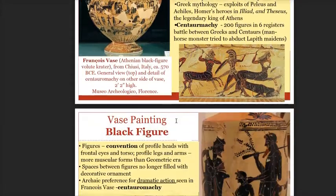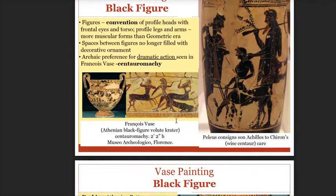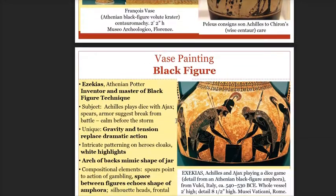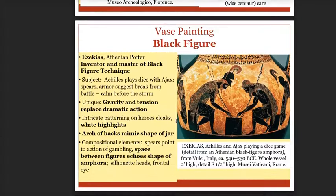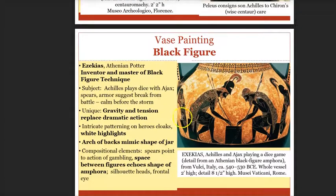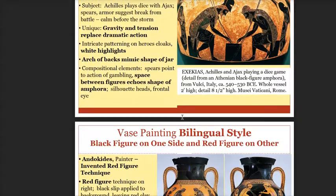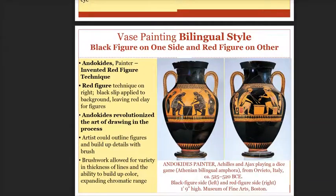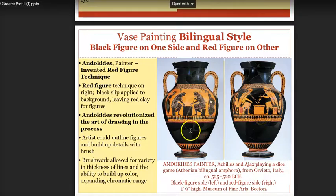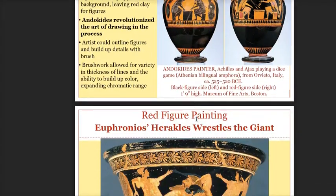Here are more examples of black figure painting. This is a very important vase showing two gods playing dice — a black figure style vase. Sometimes a vase could have two different styles on one piece: black figure painting on one side and red figure on the other. This is called a bilingual style vase.